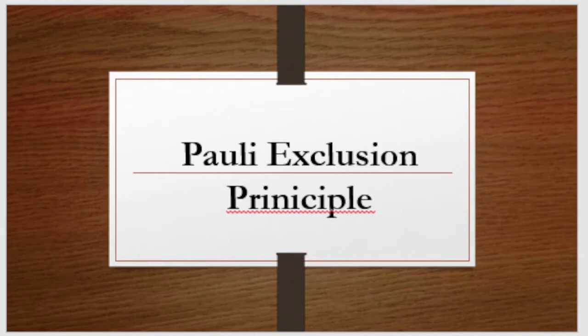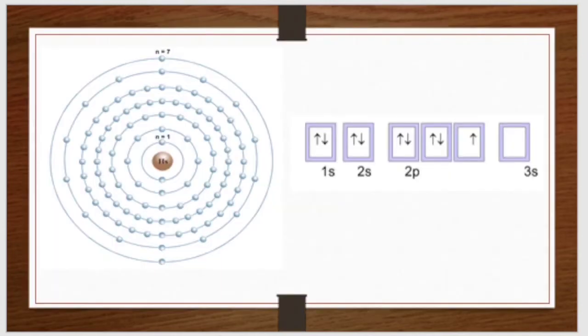So, why is the Pauli Exclusion Principle important? It is important because this principle elaborates the electron shell structure of the atom and also tells about the way an atom sheds electrons.